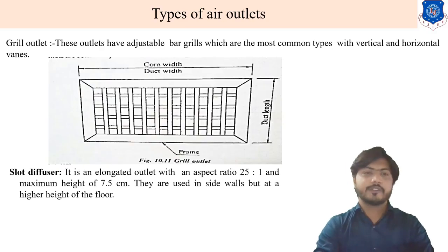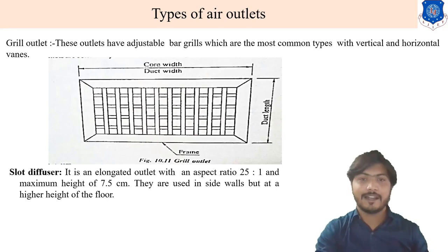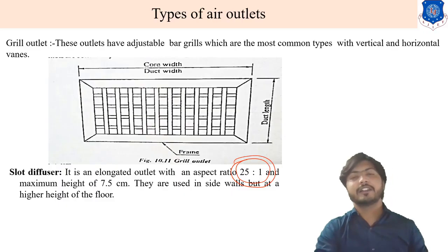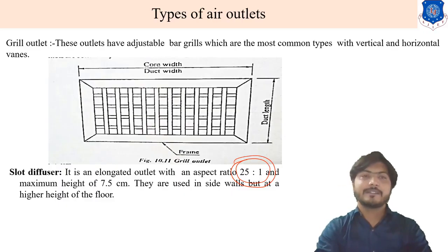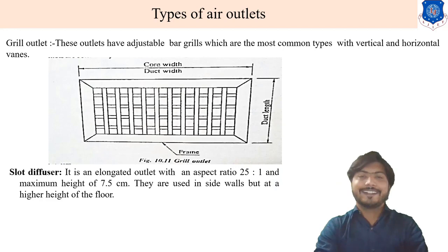Next is slot diffusers. What are slot diffusers? It is an elongated outlet with an aspect ratio. Just remember the aspect ratio of this slot-type diffuser is 25:1. The maximum height of this grill is 7.5 cm. They are used on a side wall but at a higher height from the floor.